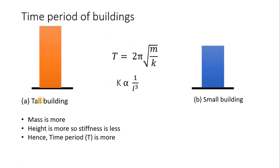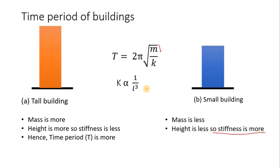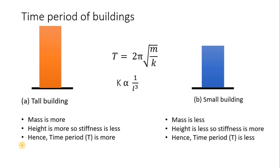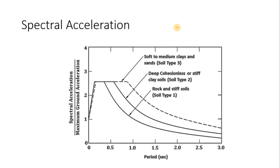For the small building: mass is less and height is less, so stiffness will be more. More stiffness means less time period. In conclusion, tall buildings have a greater time period and small buildings have a lesser time period. Now let us look at spectral acceleration using the graph from IS code.